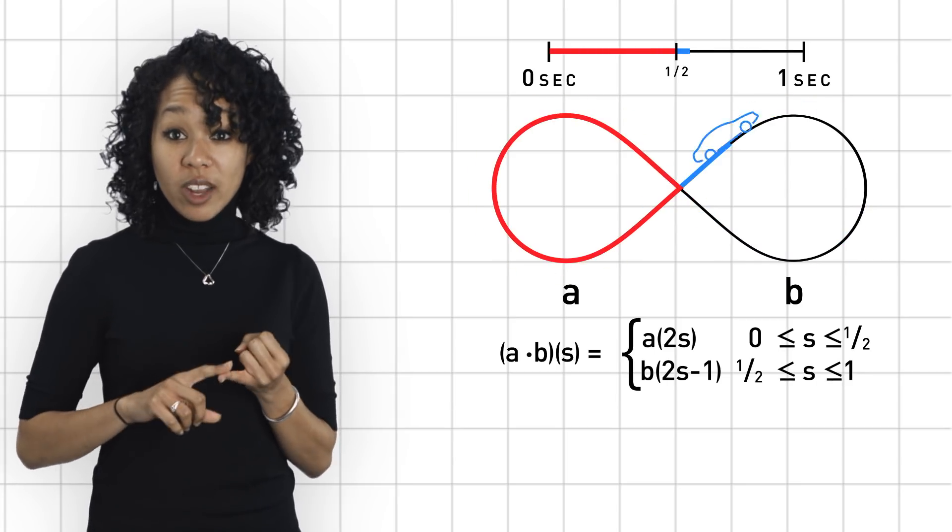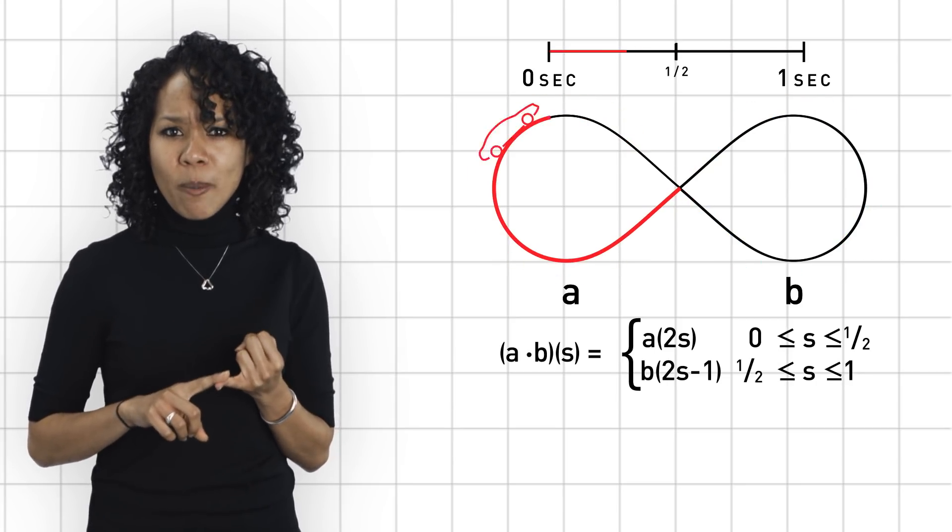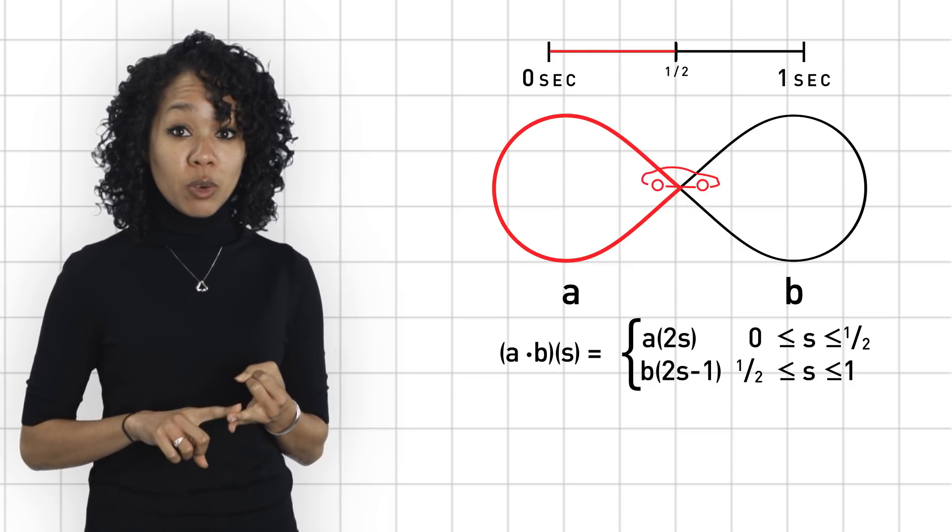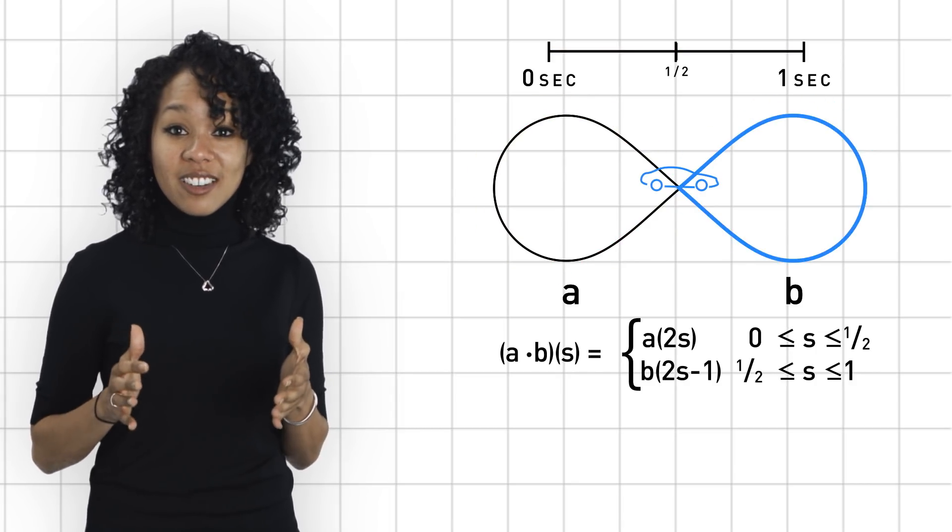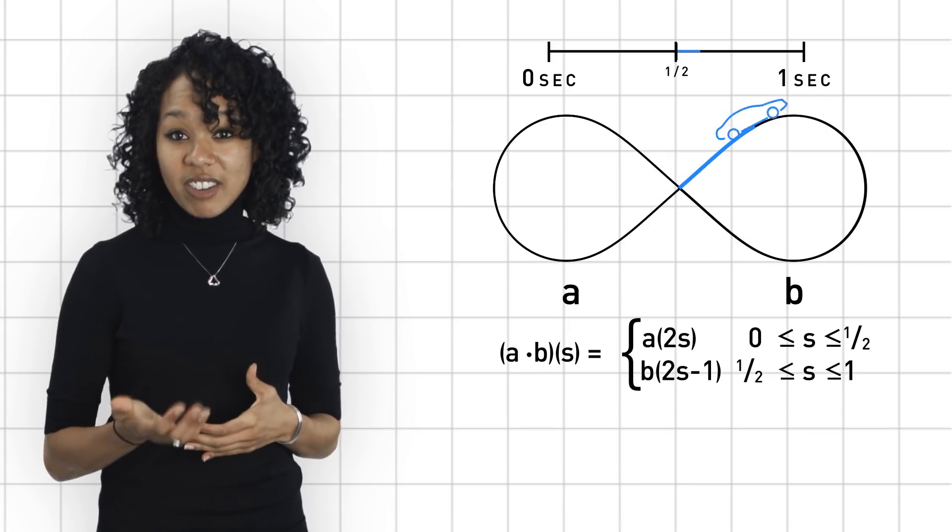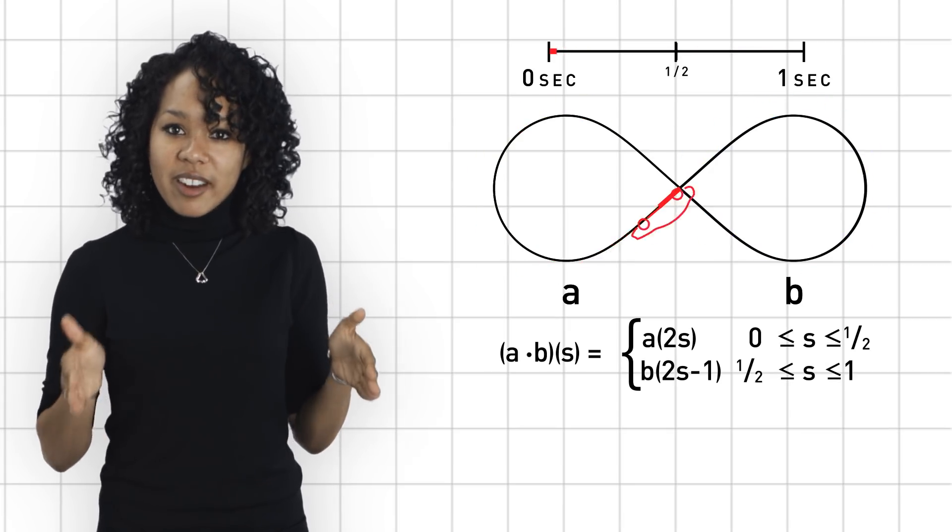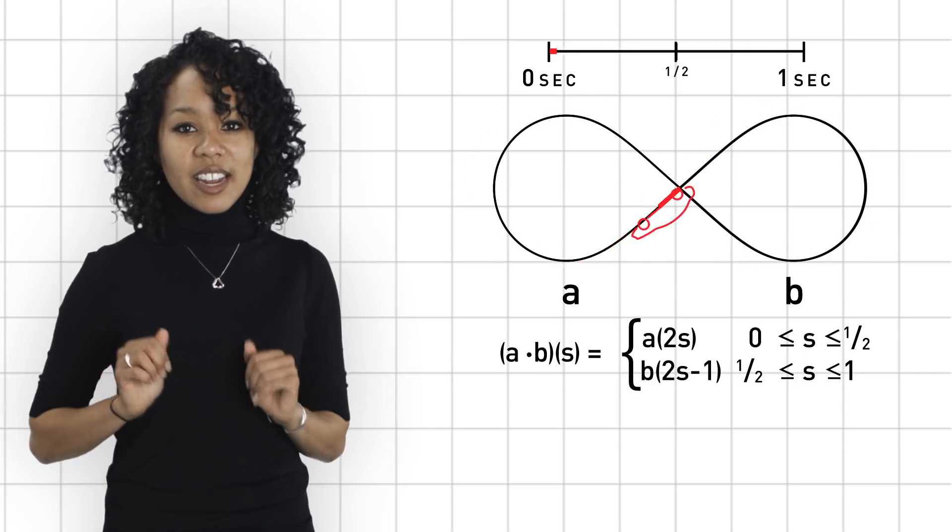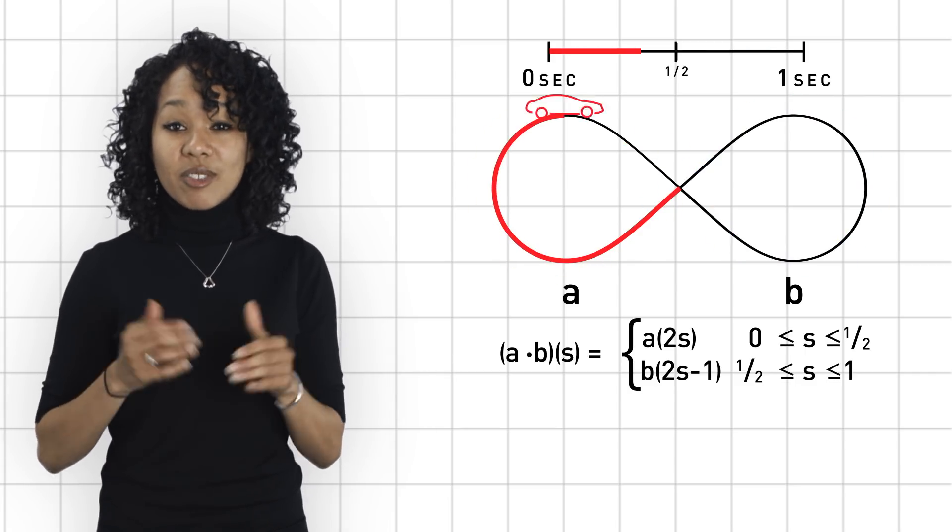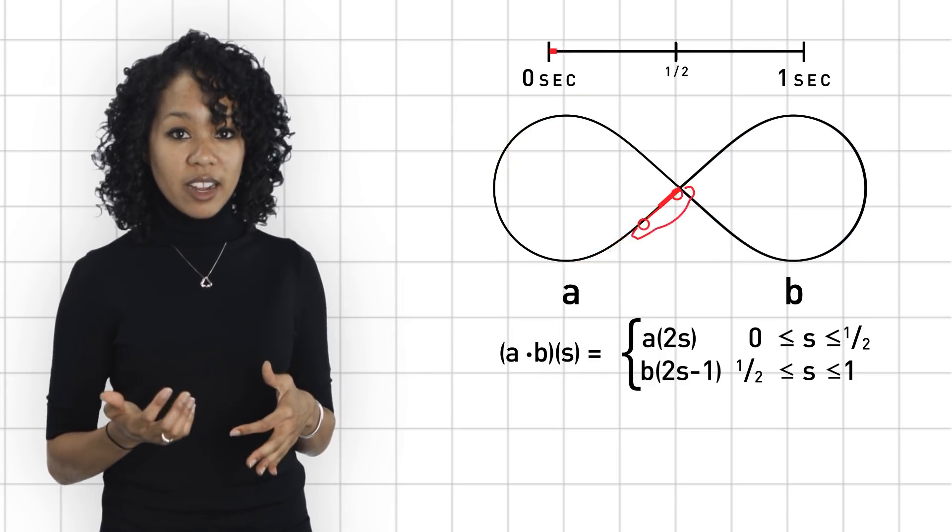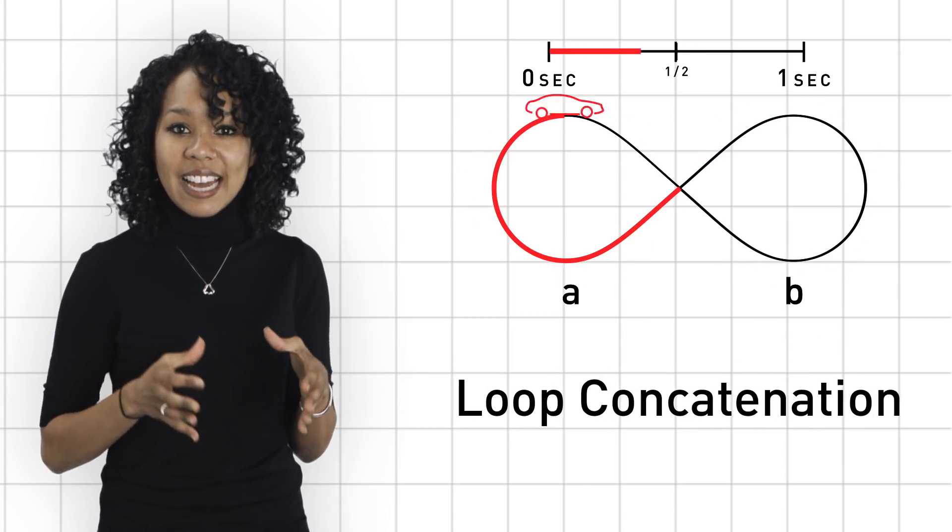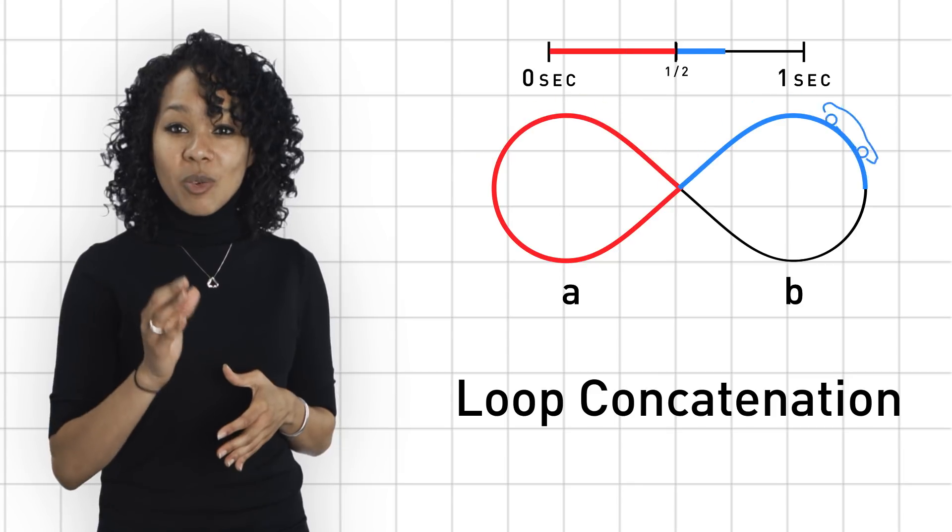So, this wedge of two loops can really be thought of as a single loop. Why? Because, one, we have instructions for traversing the whole path within one second, and two, the starting and ending points are the same. And this gives us a multiplication. And what are the multiplication instructions? Well, you split the time interval in half. On the first half second, go around the first loop, and on the next half second, go around the second loop. And the result is a bona fide third loop. This multiplication, or product, of loops is called loop concatenation.